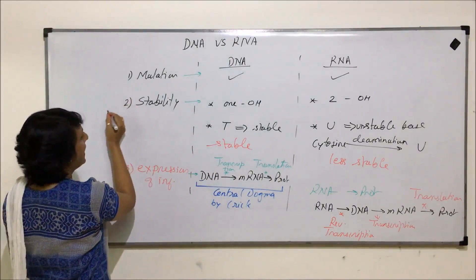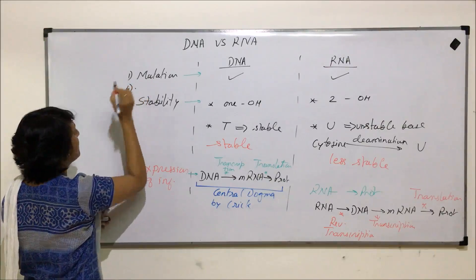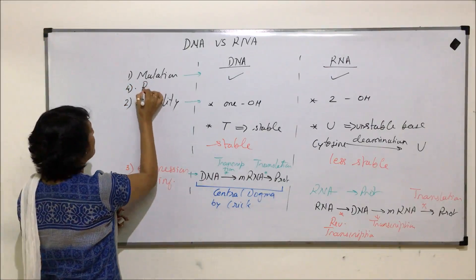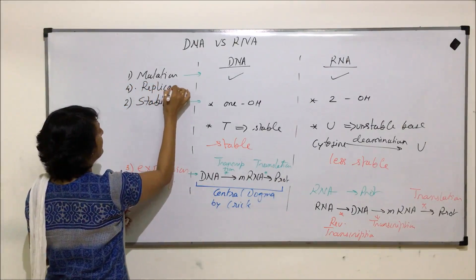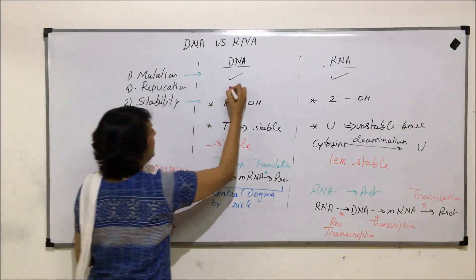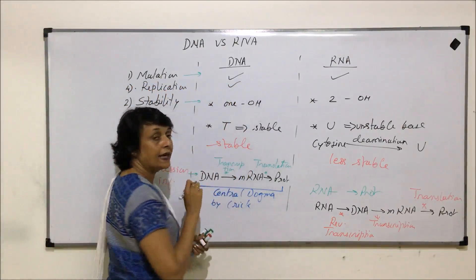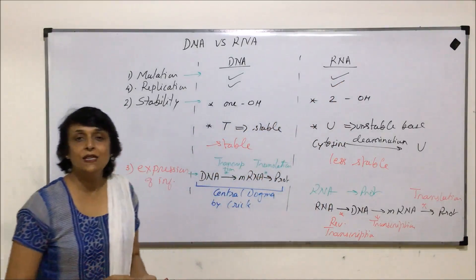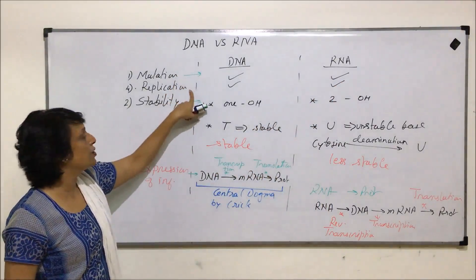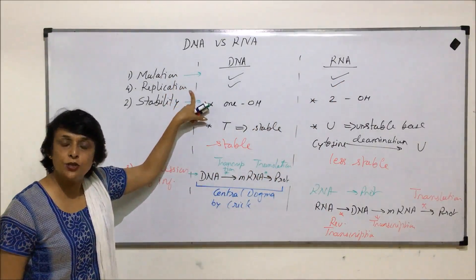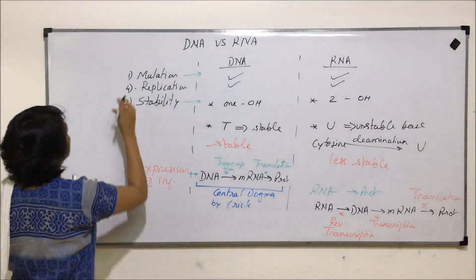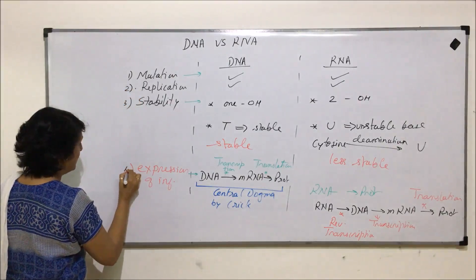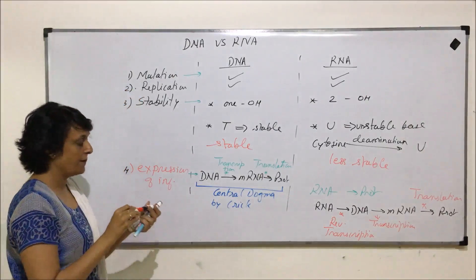Now let us add one more point — replication. DNA replicates on its own and RNA can also replicate. So on the basis of mutation and replication, DNA and RNA show the same properties.